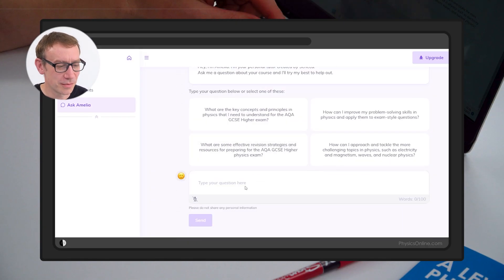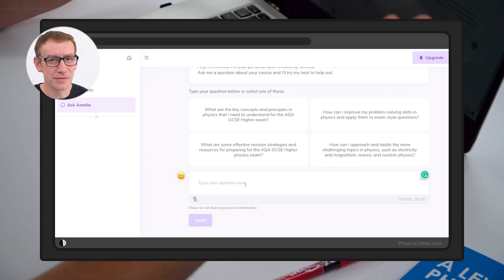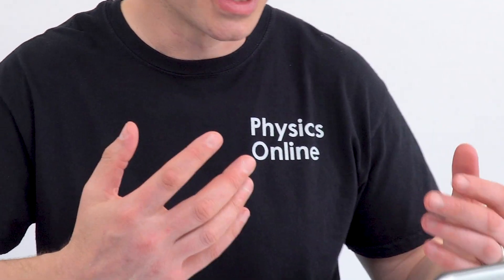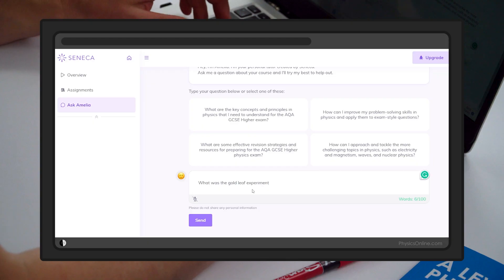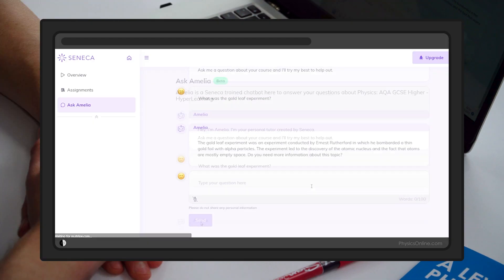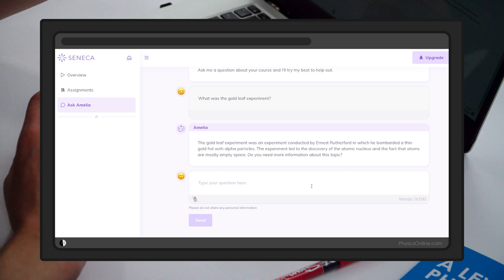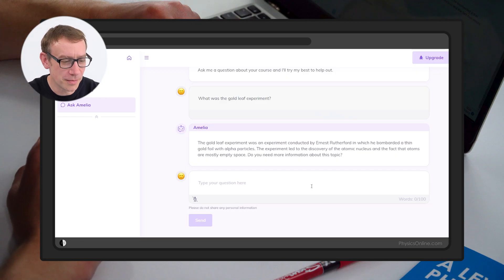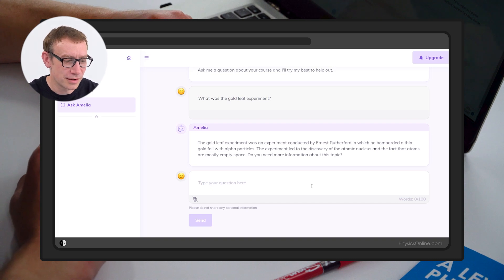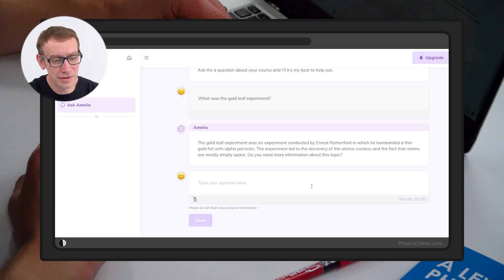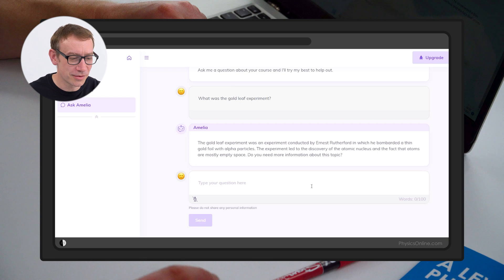So let's ask this personal tutor something about, again, let's do physics, says on the t-shirt. What was the gold leaf experiment? So it says here, and often this is called the alpha particle scattering experiment, the gold leaf experiment was an experiment conducted by Ernest Rutherford. He bombarded a thin gold foil with alpha particles, which led to the discovery of the nucleus and the fact that atoms are mostly empty space. Do you need more information about this topic?